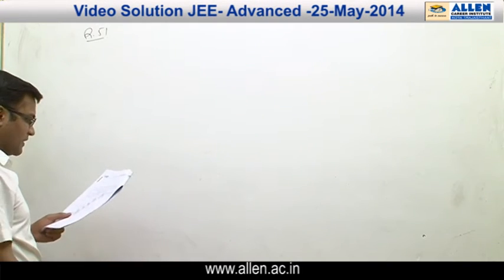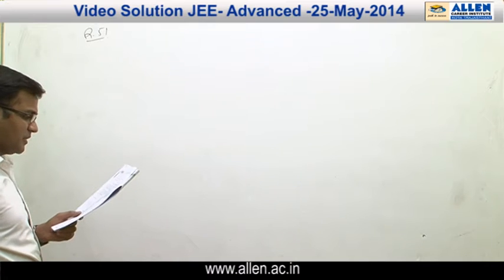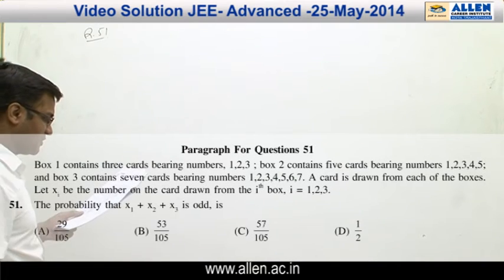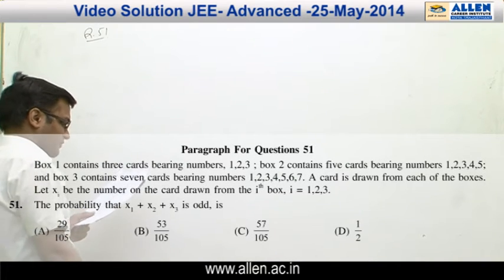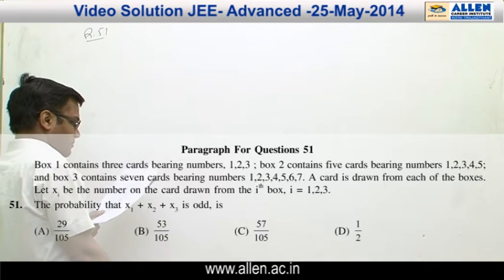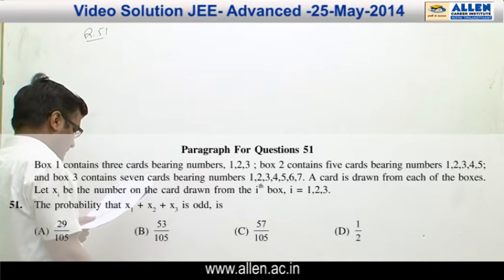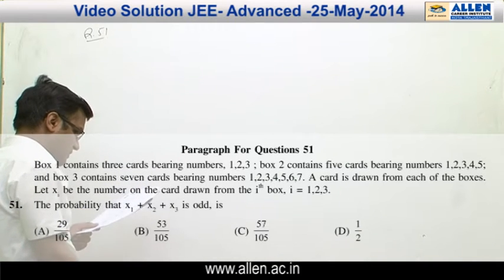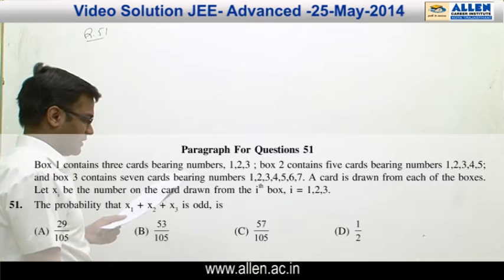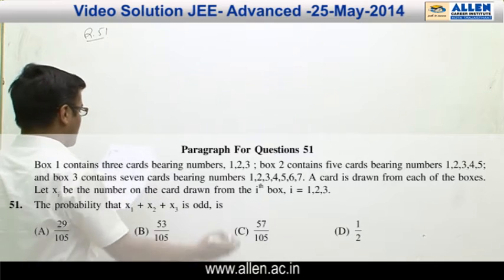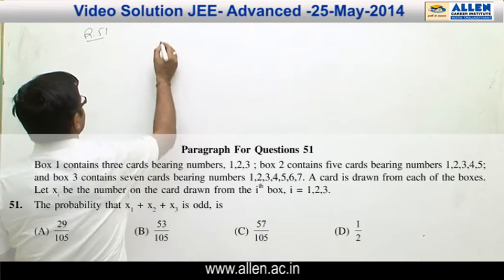Information is: box 1 contains 3 cards bearing numbers 1, 2, 3. Box 2 contains 5 cards bearing numbers 1, 2, 5. And box 3 contains 7 cards bearing numbers 1, 2, 7.